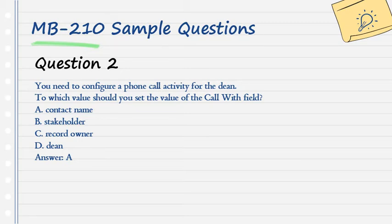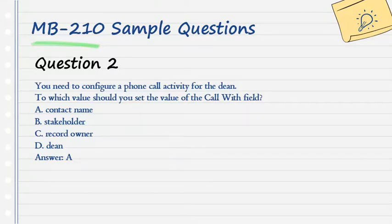Question 2. You need to configure a phone call activity for the dean. To which value should you set the value of the 'Call With' field? A. Contact name. B. Stakeholder. C. Record owner. D. Dean. Answer: A.